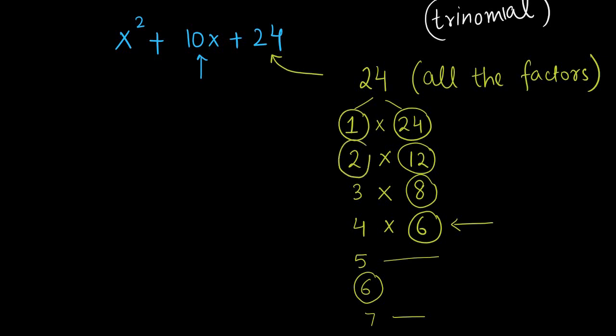So till here we have written all the factors: 1, 24; 2, 12; 3, 8; and 4, 6. Understand this part very clearly because this one is the important part now.